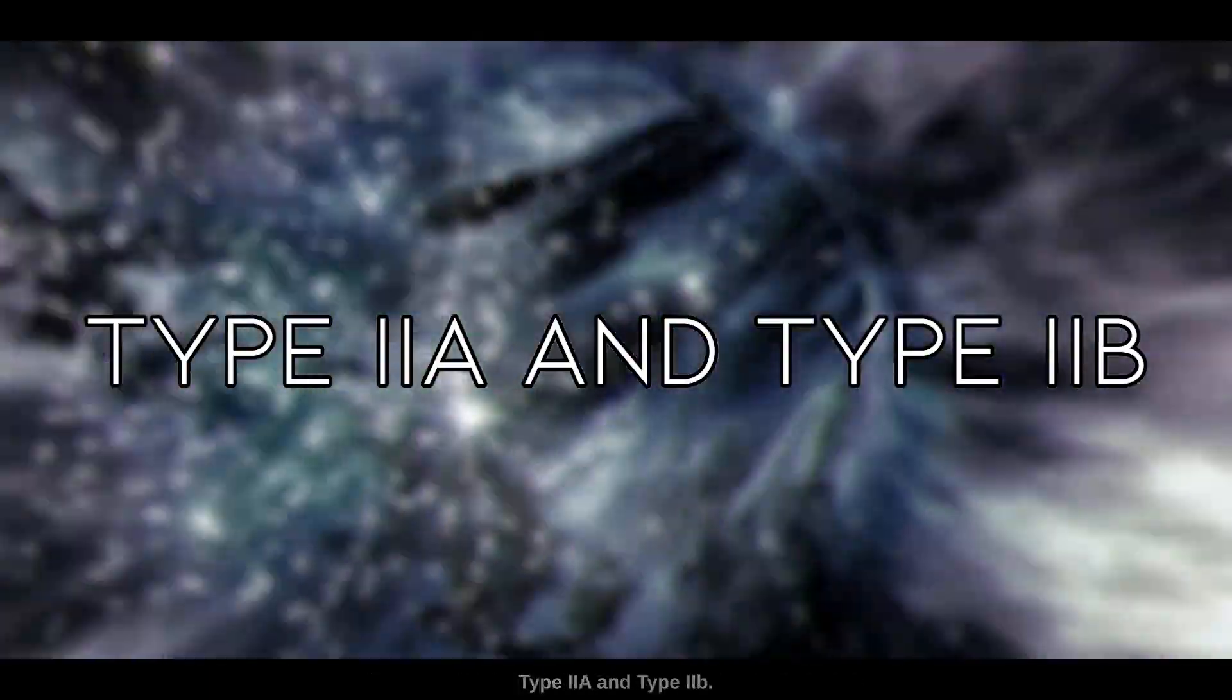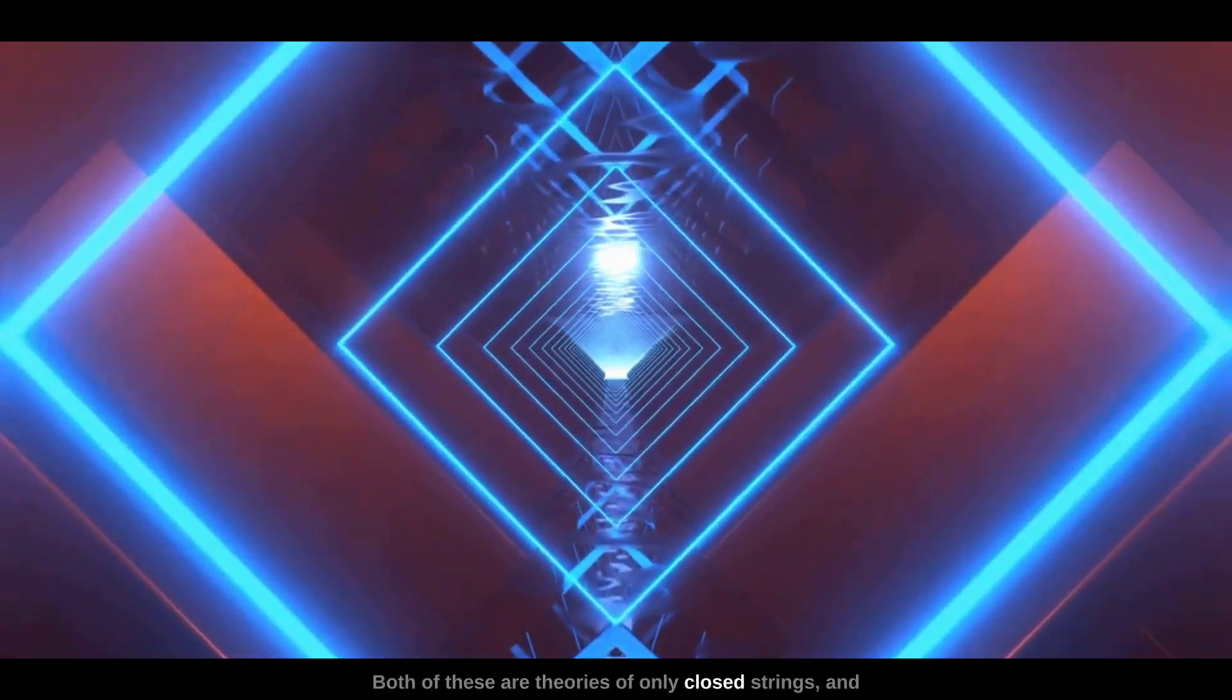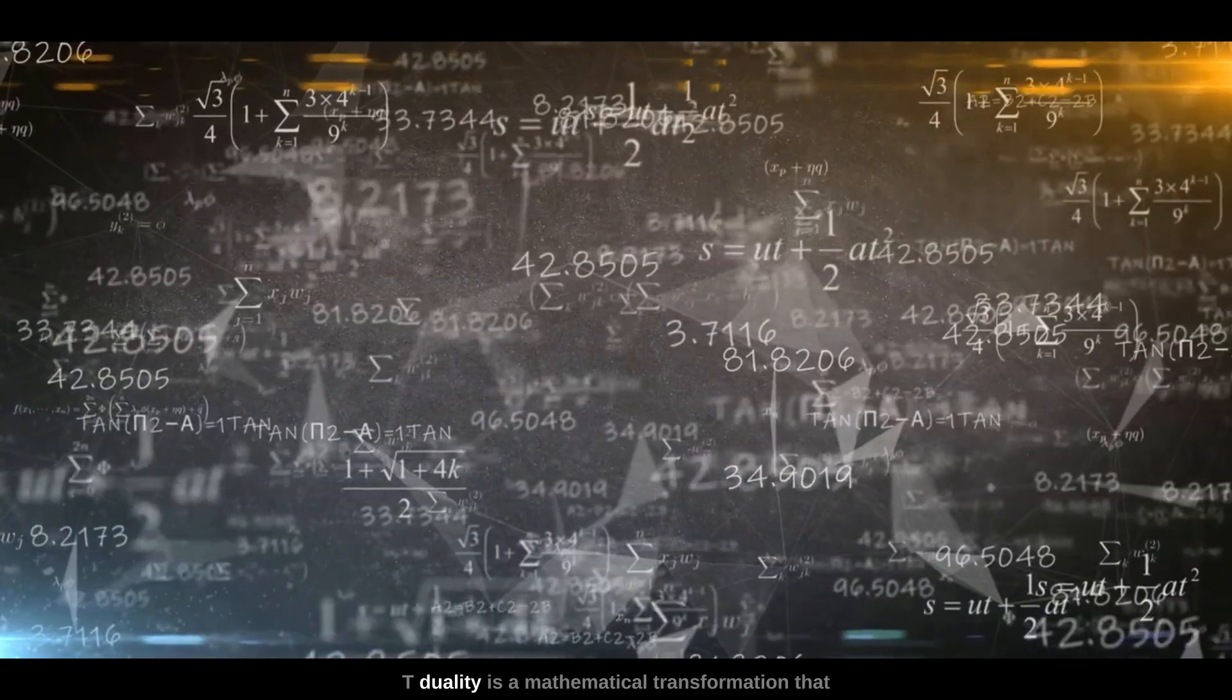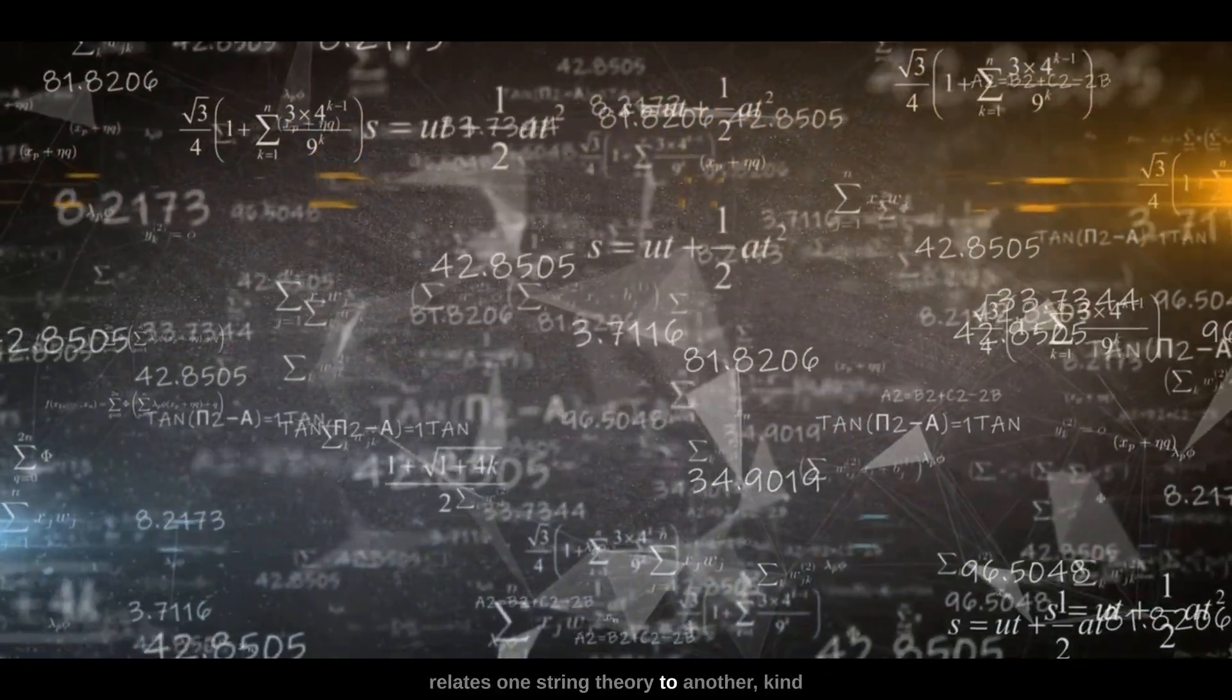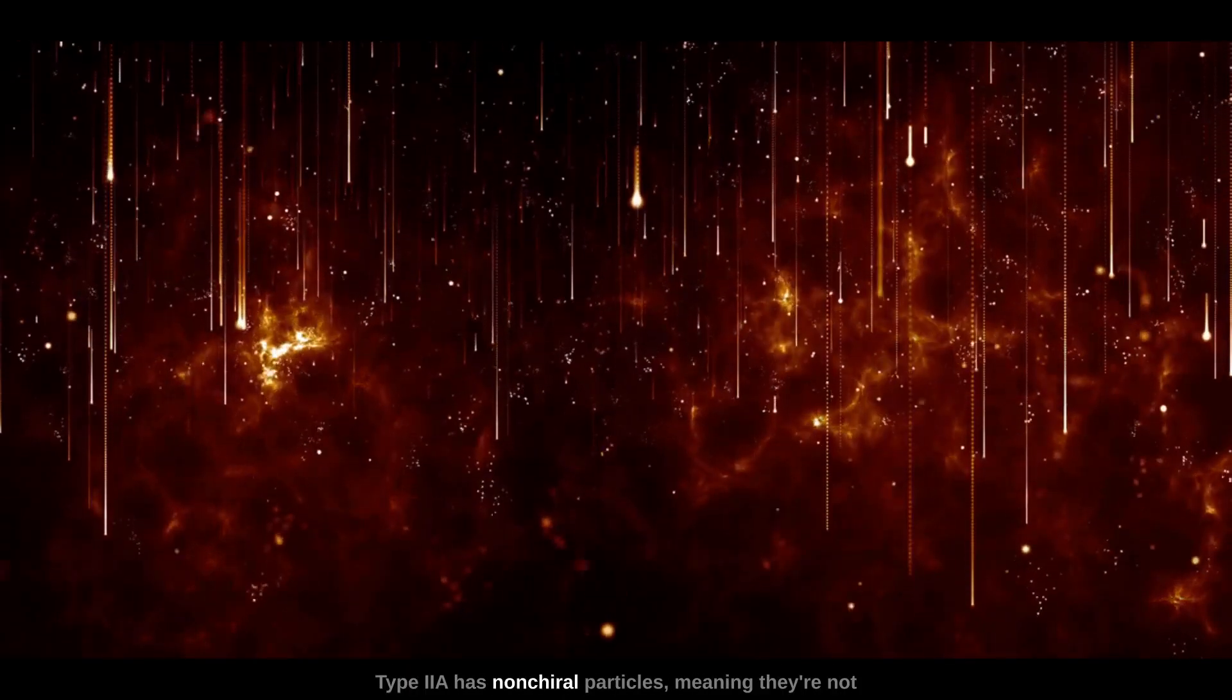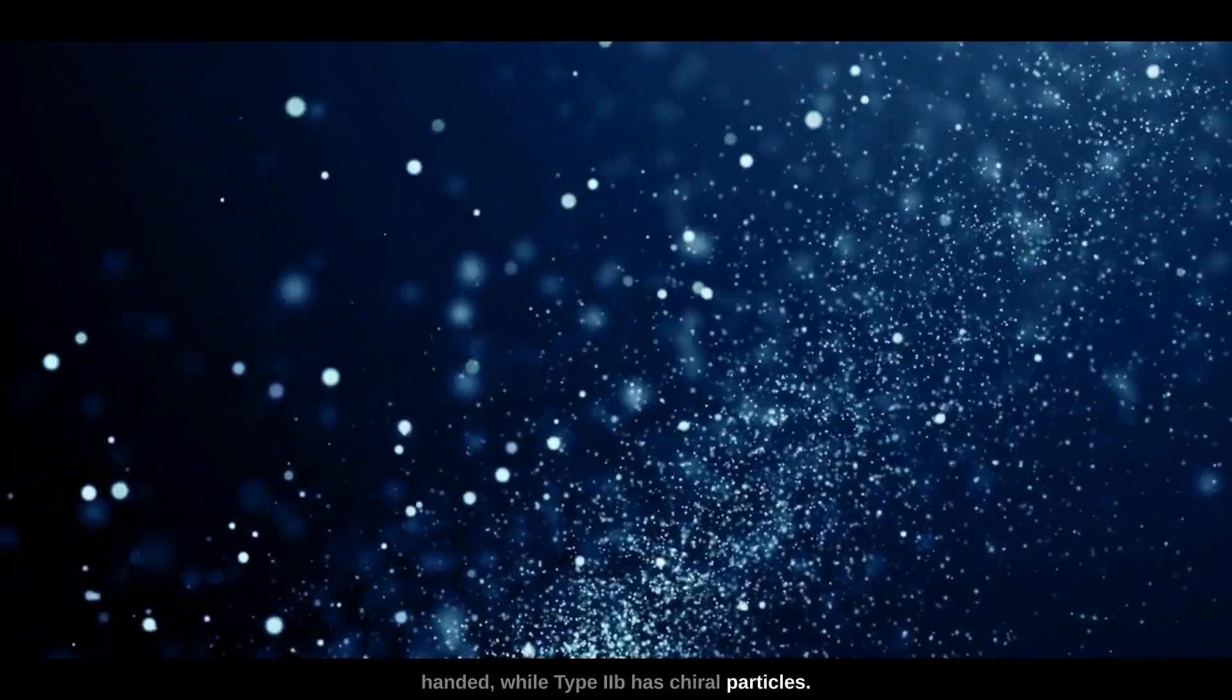Type IIA and Type IIB: Both of these are theories of only closed strings, and they are related by something known as T-duality. T-duality is a mathematical transformation that relates one string theory to another, kind of like a mirror reflection. Type IIA has non-chiral particles, meaning they're not handed, while Type IIB has chiral particles - they do have a handedness.